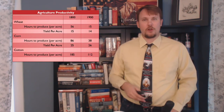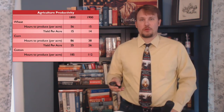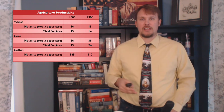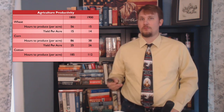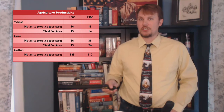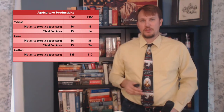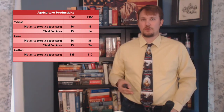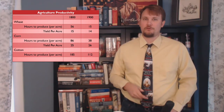One of the ironies was that as farming became more mechanized and more efficient, it led to overproduction and therefore lower prices. As you can see from this chart, as the Gilded Age progresses, it took less and less work to produce more and more food. So farmers are becoming very efficient during this period, and there's just too many farmers producing too much food.